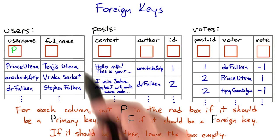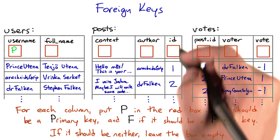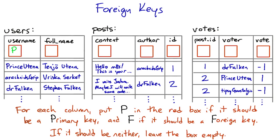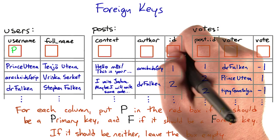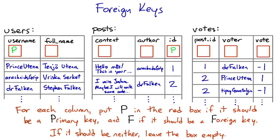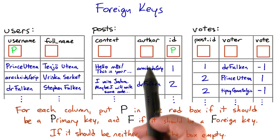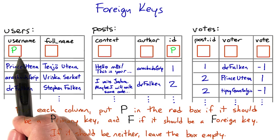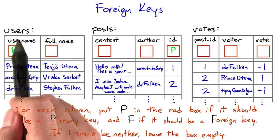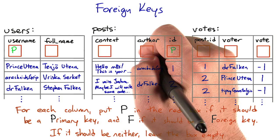Next, the posts table. Each post has a unique ID, and that's the primary key. And the author column here seems to refer to the users table's username column, so that's a foreign key.